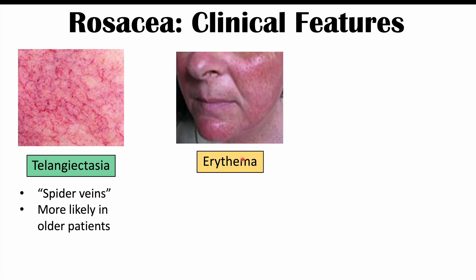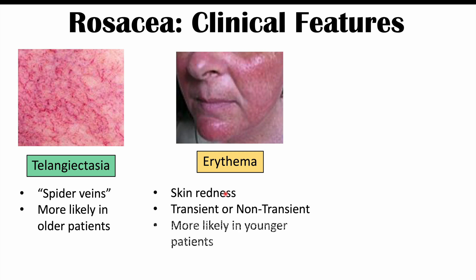Another skin finding we can see is erythema, which is a skin redness. The skin redness can be transient or non-transient, meaning it can be longer lasting. You may have issues where the skin is very red for long periods of time, or it can simply come and go. Erythema is more likely to occur in younger patients, as opposed to telangiectasia which tends to occur in older patients.